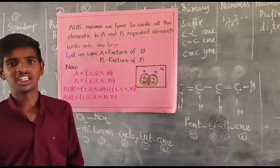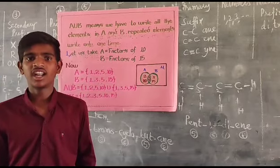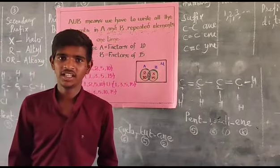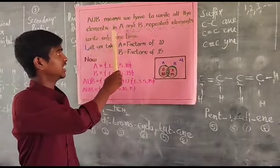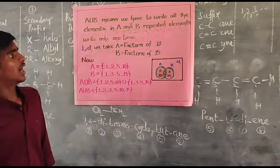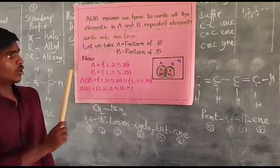Today I will explain about Venn Diagram of A Union B. A Union B means we have to write all the elements in A and B and repeated elements write only one time.